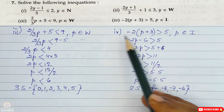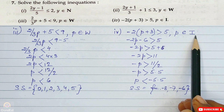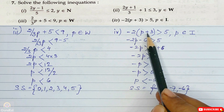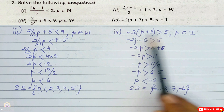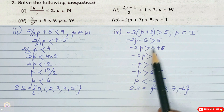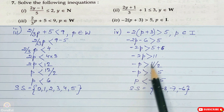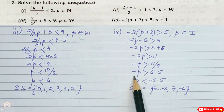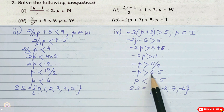Now the fourth part. It is minus 2 bracket p plus 3 bracket close greater than 5, where p belongs to integers — integers means negative numbers are included. So we multiply minus 2 by each term in the bracket. So minus 2p minus 6 greater than 5 — minus into plus is minus, giving 6. Bracket removed. Minus 2p greater than 5 plus 6. So minus 2p is greater than 11. Hence minus p greater than 11 by 2. So minus p is greater than 5.5. Therefore p is less than minus 5.5.